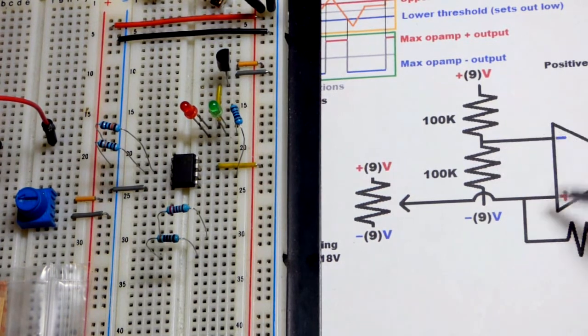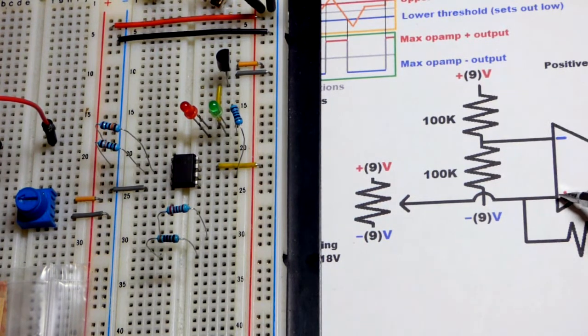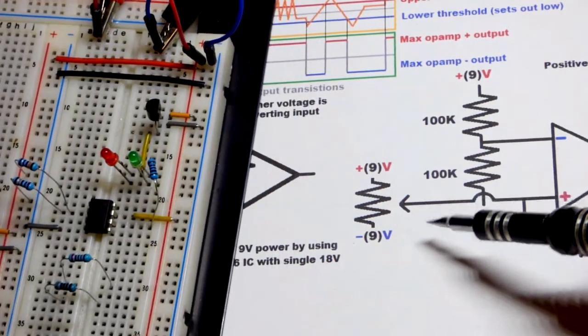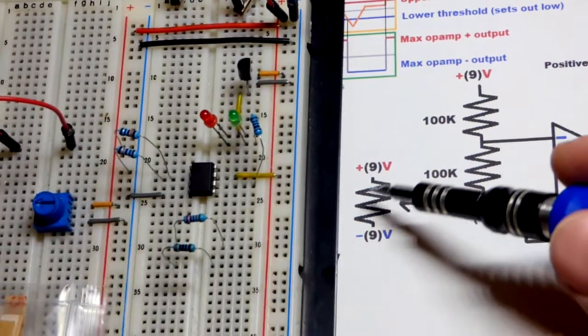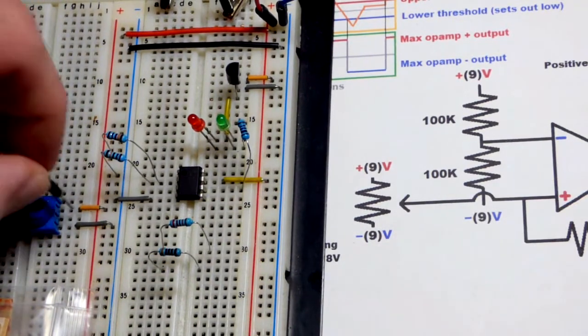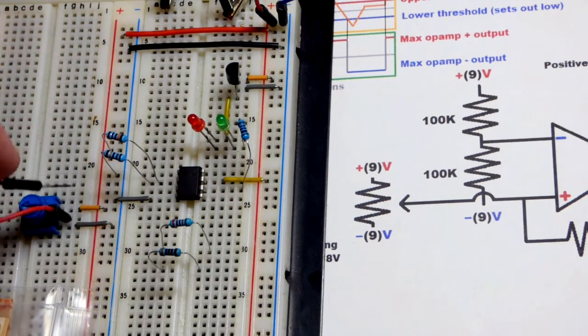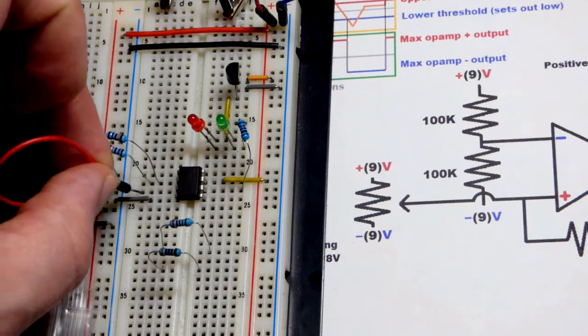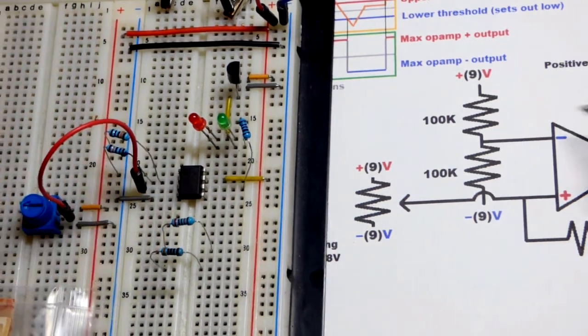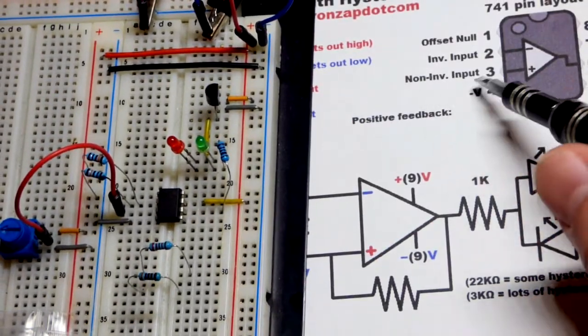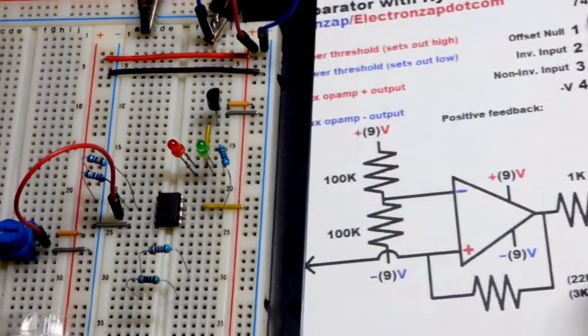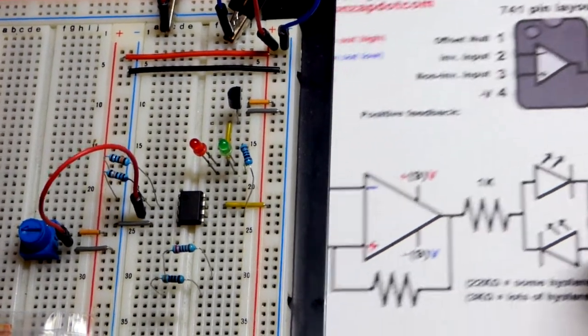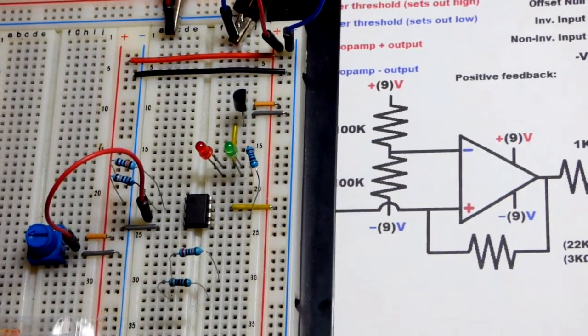We're going to compare the voltage we set there to our non-inverting input. I got this 10 kiloohm trim pot—positive rail, negative rail. The exact value is not terribly important, but with positive feedback it will make a little more difference than a regular comparator circuit. That is the non-inverting input right there for the 741 op-amp.